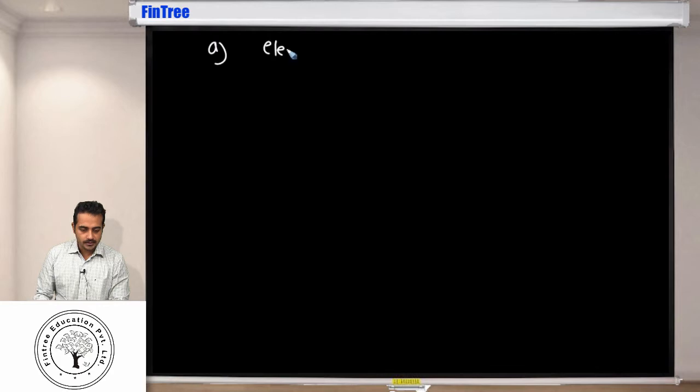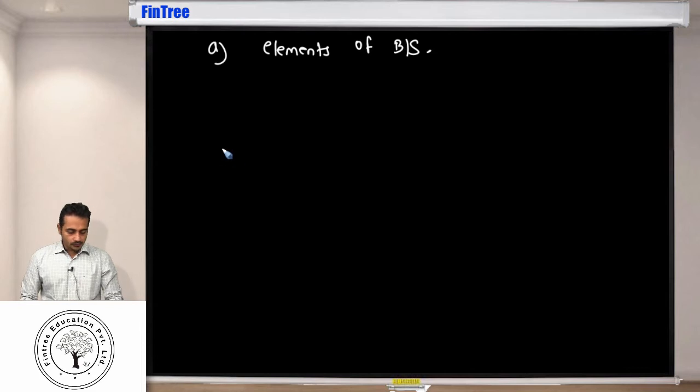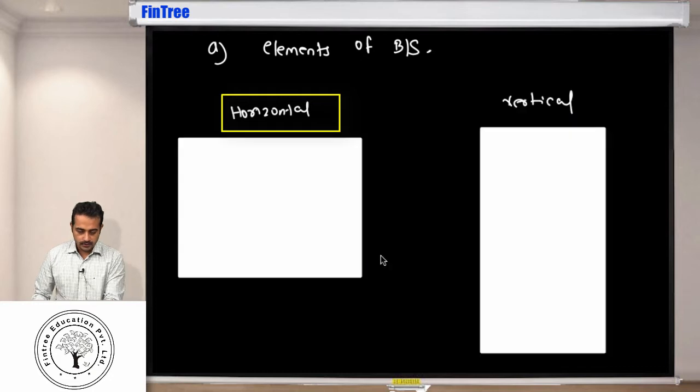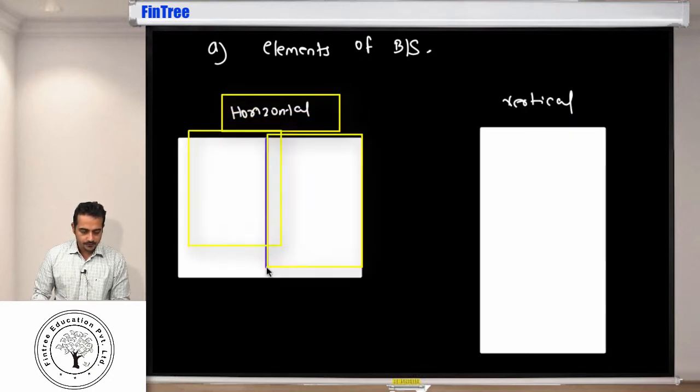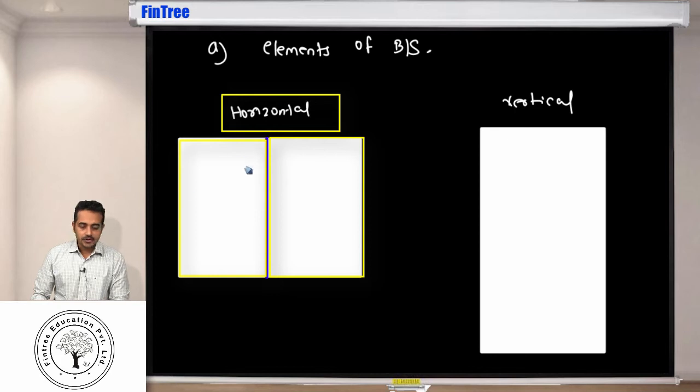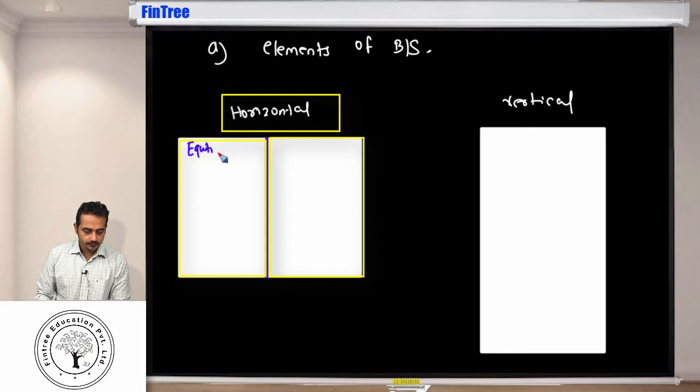Learning outcome A is about elements of balance sheet. This is the fashion in which we can prepare balance sheet, horizontal or vertical. It would be broken down into two parts. By convention in India we write equities and liability on the left and assets on the right. Most countries do it the other way around where they write assets on the left and equity and liability on the right.